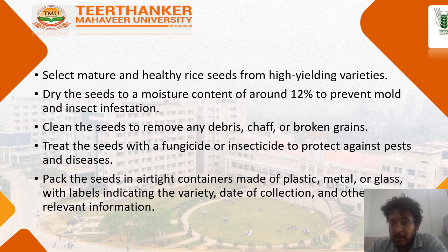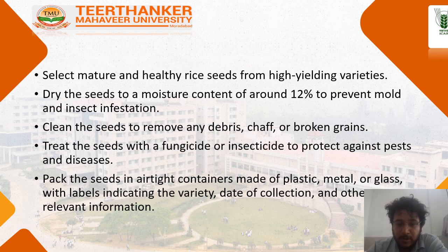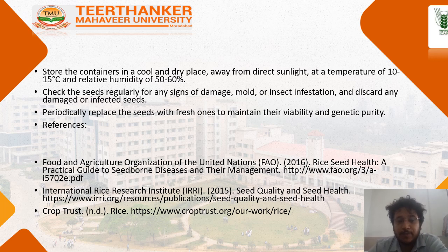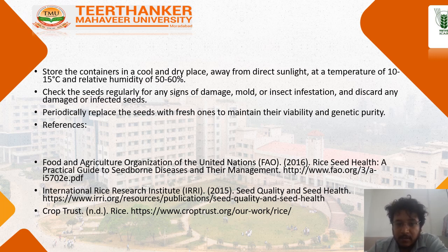A few important points to remember for good seed life: reduce the moisture content of the seed to 12% to prevent more than 5% infestation. Clean the seed to remove debris, chaff, and leaves. Treat the seed with fungicide or insecticide and store it in plastic or metal containers in a dry place away from sunlight. Maintain a temperature of 10 to 15 degrees Celsius and a relative humidity of 50 to 60%.